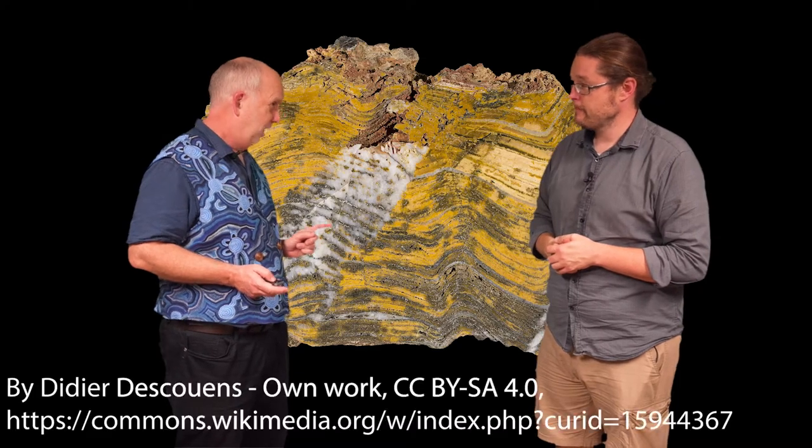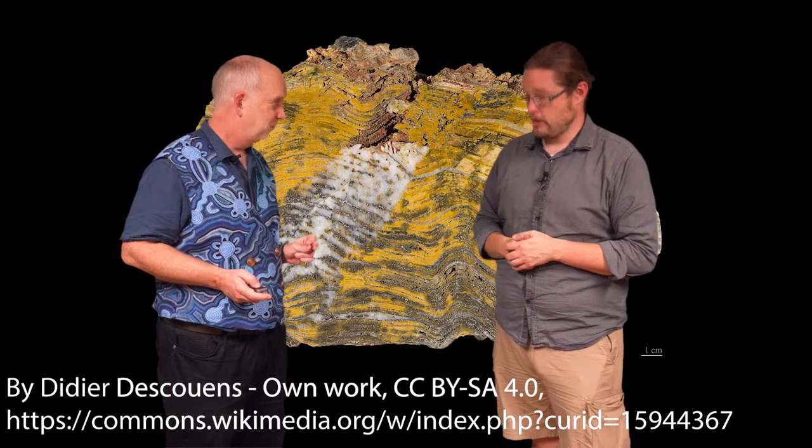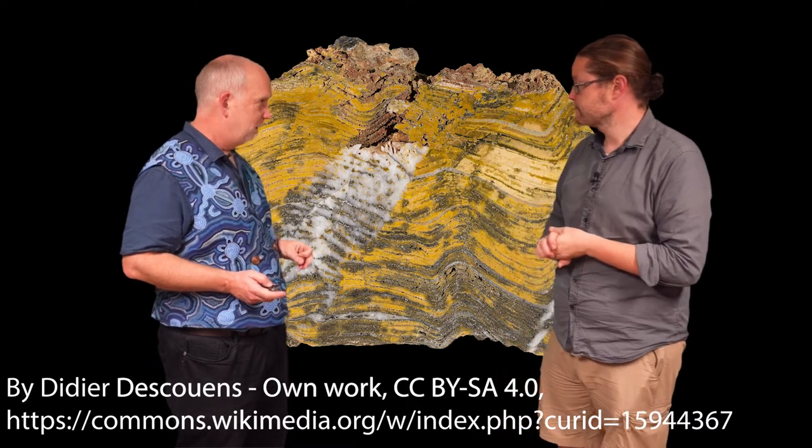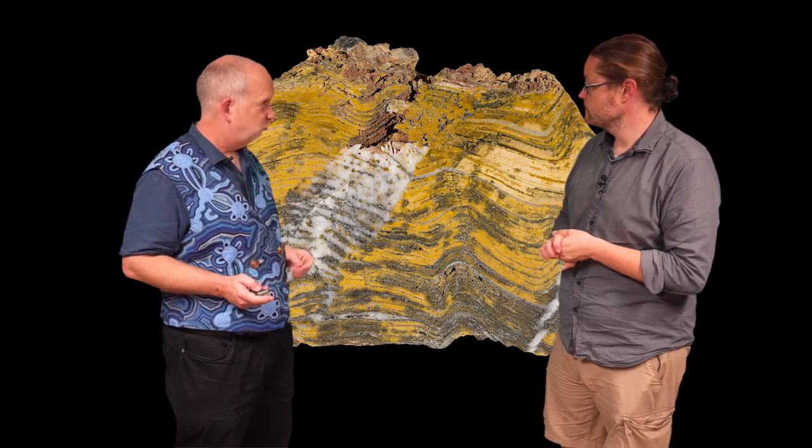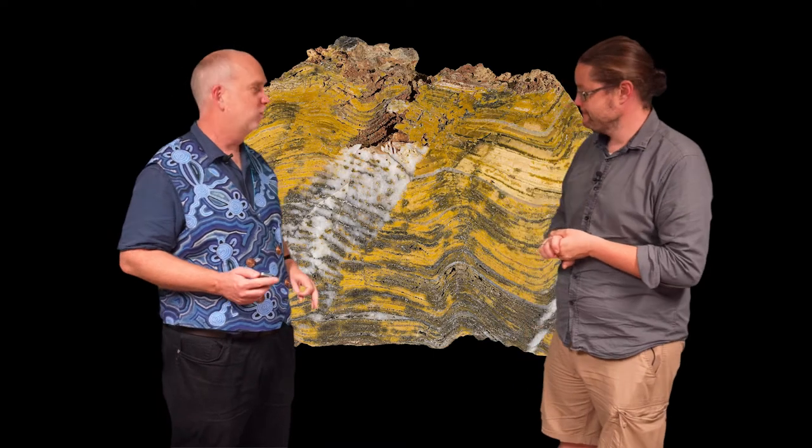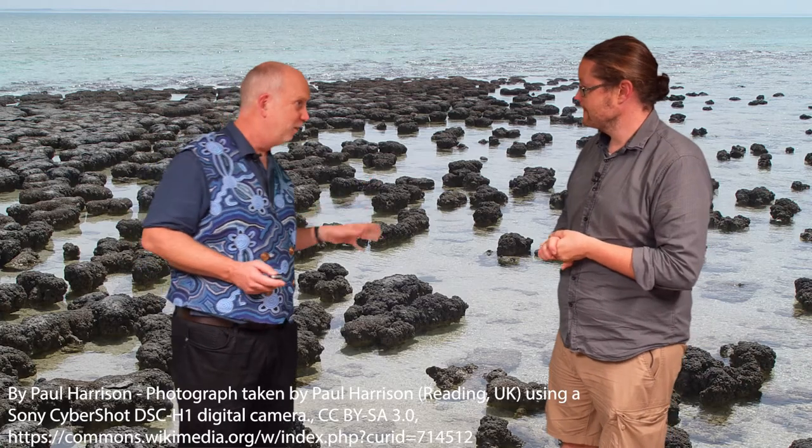So, but we know there's one clue that maybe is a bit easier than we think. Which is we can look at very old rocks on Earth and see signs of life. So, you've got rocks that could be more than three billion years old, and they show, in this case, signs of stromatolites.